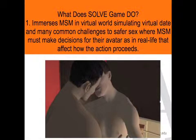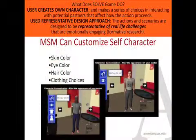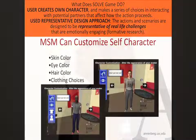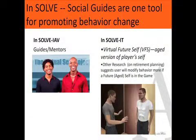The SOLVE game immerses MSM in virtual worlds simulating a virtual date and many common challenges to safer sex, where men must make decisions for their avatars — as in real life — that affect how the action proceeds. Users choose and customize their own character in many different dimensions, and this character then makes a series of choices. We used something called representative design, where we designed environments and challenges to mirror the challenges, context, and associations that these men face in real life. Our social guides are one tool for promoting behavior change. We replaced pop-up guides with a virtual future self — we took the character the user developed, aged it, and that became the guide.